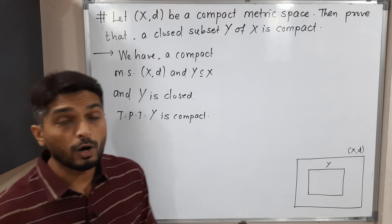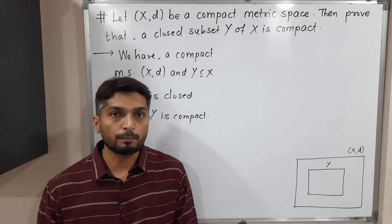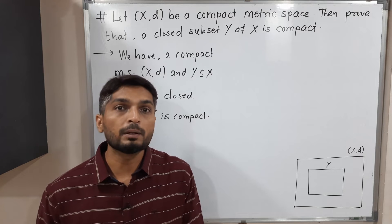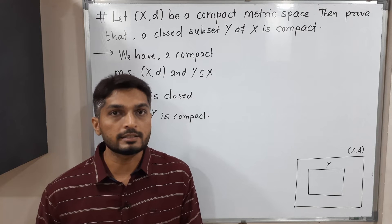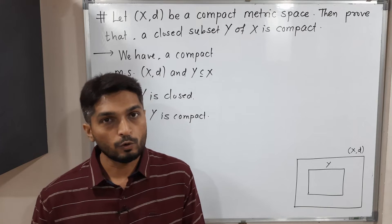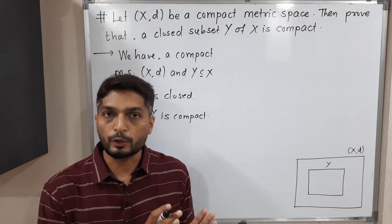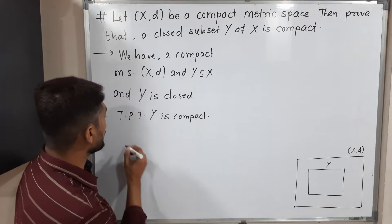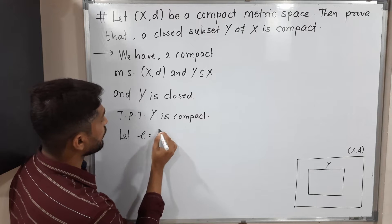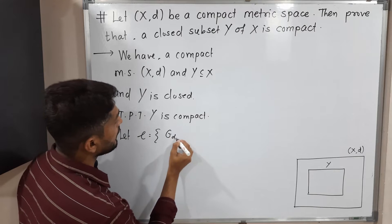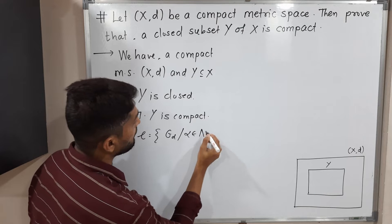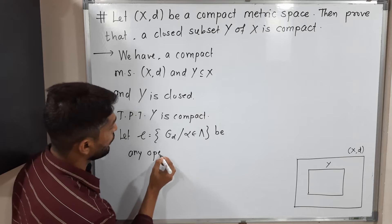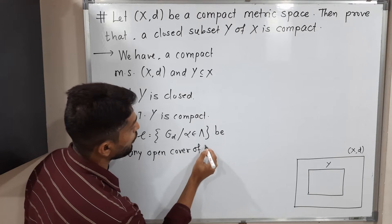Y is compact. So how do we prove that any set or any metric space is compact? We have to prove every open cover has a finite sub-cover. Then we can say the given set or metric space is compact. So using the same definition, let us consider any open cover of Y. Let G_alpha, alpha belonging to lambda, be any open cover of Y.